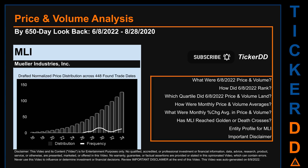MLI went public on February 25, 1991, which was roughly 31 years ago. Looking back 650 calendar days from Wednesday, June 8, 2022, we found 448 applicable trade dates for use in our analysis. The chart shown on this page is our initial attempt at studying the price for MLI after dynamically normalizing price distribution across those discovered trade dates.